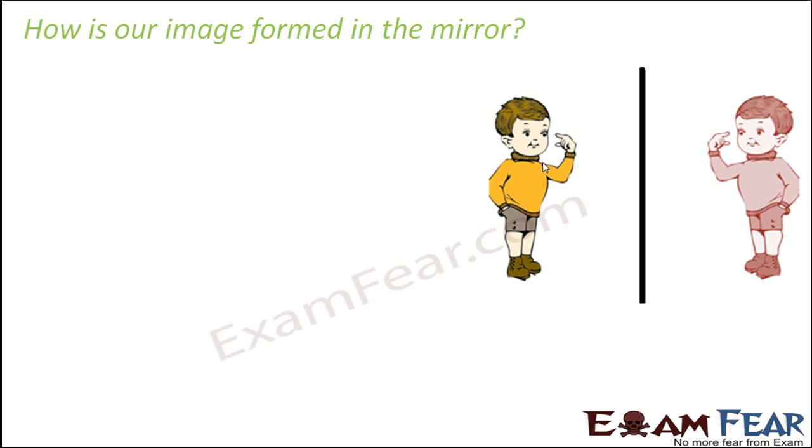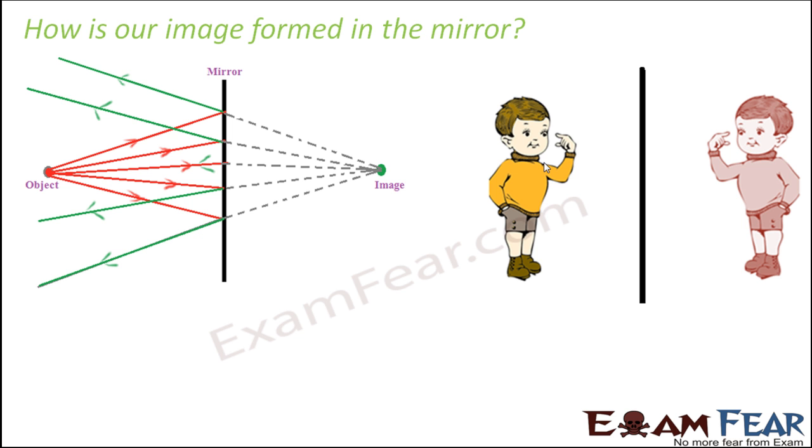Basically what happens is light falls on the mirror. So as you see here, light from the object - which is the object here? We are the object.